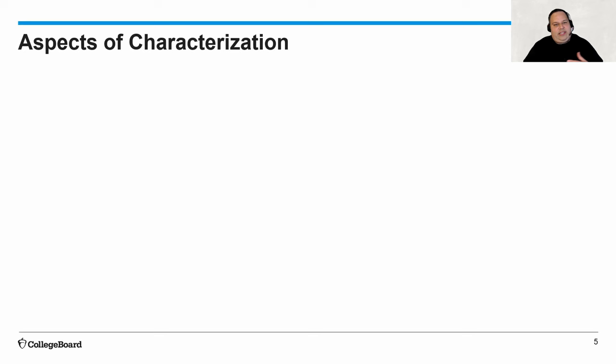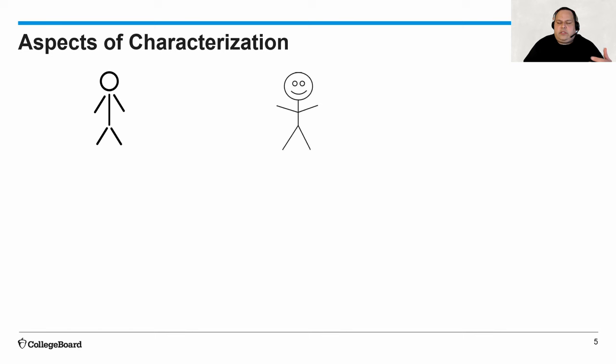The first thing we'll discuss are the aspects of characterization. When we first encounter a character in a book — when you open a novel or a short story for the first time and you see a character's name — this person is essentially a stick figure. You don't know anything about them. They're not your best friend yet. As you start to delve into the reading, you're going to see how these characters feel and think, and these are the aspects of characterization.